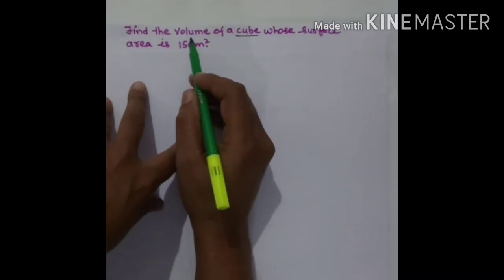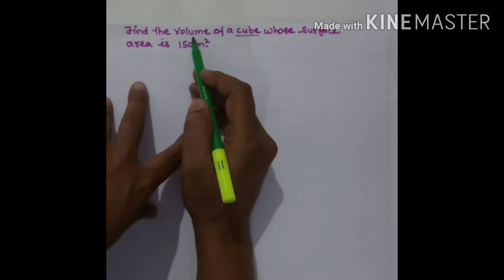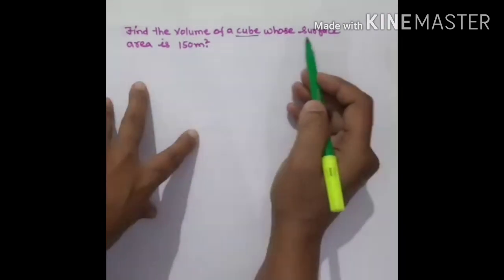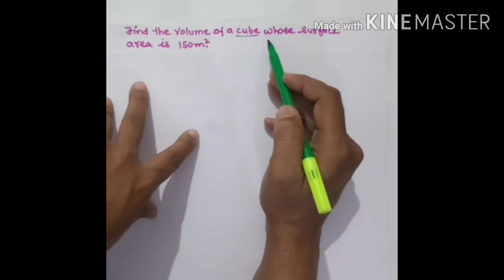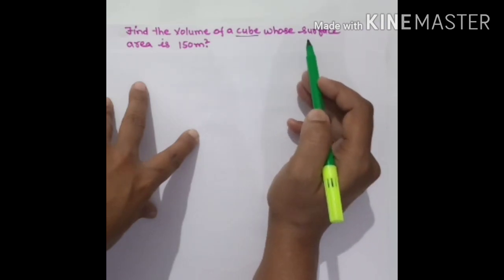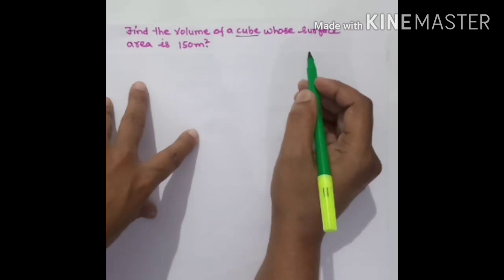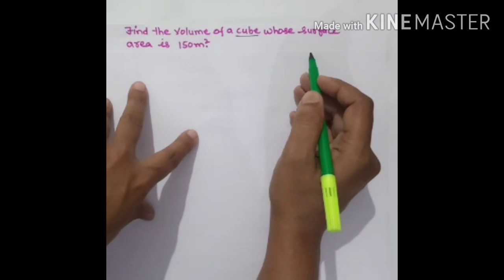You have to know the formula for volume as well as surface area of a cube. You should know the skills of finding square root as well as finding cubes. Both the skills regarding squares and square roots, and cubes and cube roots are required here.